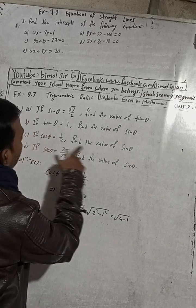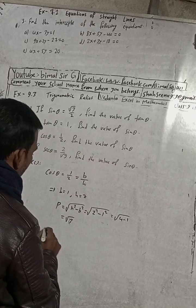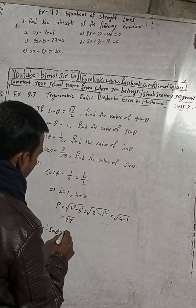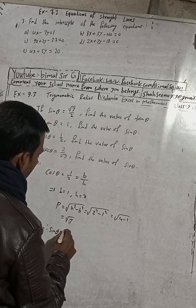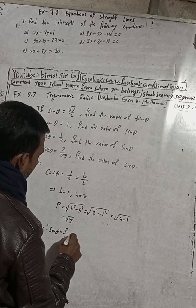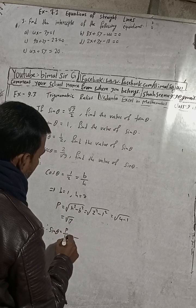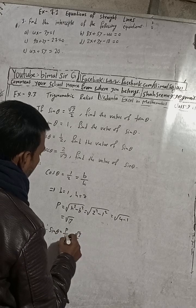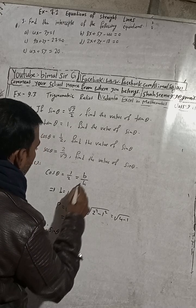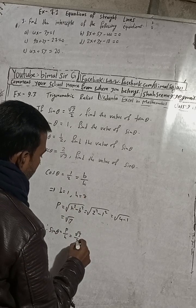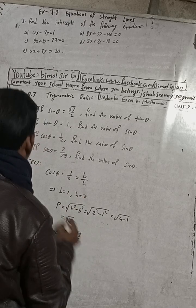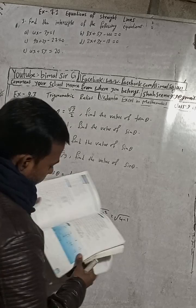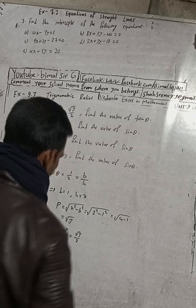Now we find sin θ. Therefore sin θ equals P by H, where P equals √3 and H equals 2. So sin θ equals √3 by 2. The answer in the book for part C is √3 by 2 — correct.